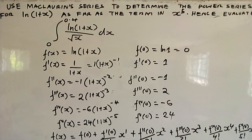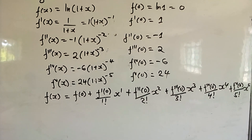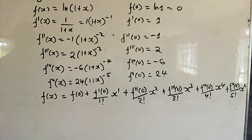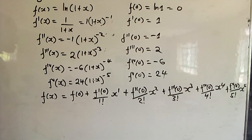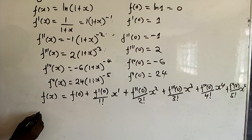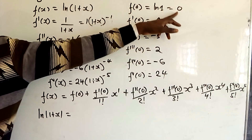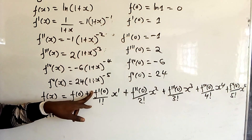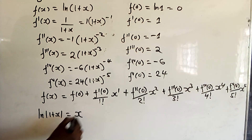Now substituting: f(x) = ln(1+x). f(0) = 0, so that term is not there. f'(0) = 1, so 1 over 1 factorial times x gives just x. That term is x.